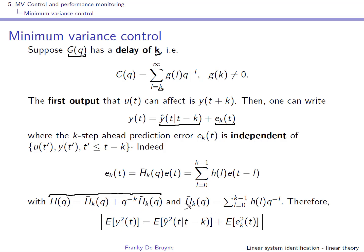We have seen previously that this can be done using the decomposition of H. The term associated with everything known at time T minus K, and H bar of K is really a polynomial. We can construct this predictor. The unpredictable part is associated with this transfer function H bar acting on E of T — we'll call it E of K T. E of K T depends on E of T up to E of T minus K plus 1, whereas the K-step-ahead prediction depends on E of T from the past up to time T minus K. Since E of T is white noise, these two terms will be independent.